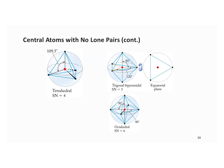A central atom with no lone pairs and a steric number of four has four groups around it — a good example of this would be methane. When we draw methane in 2D it looks like the bond angles are 90, but the bond angles are actually 109.5. Then when we get into our expanded octets, we can have a central atom with five things around it — that's trigonal bipyramidal — and octahedral has a central atom with six different atoms around it, resulting in bond angles of 90.